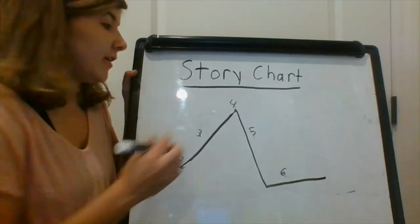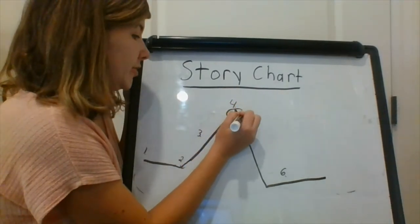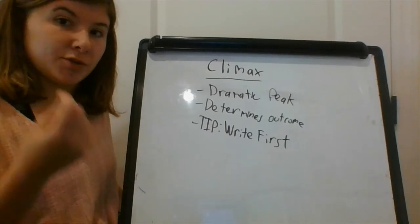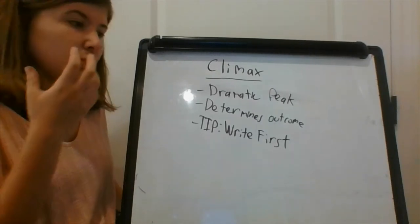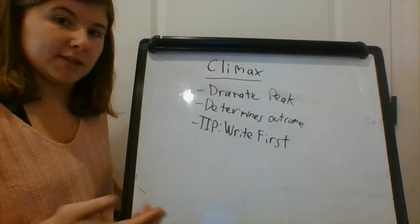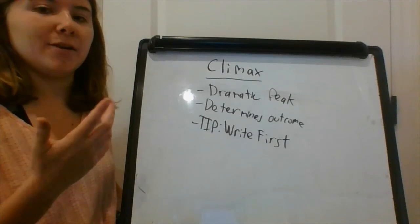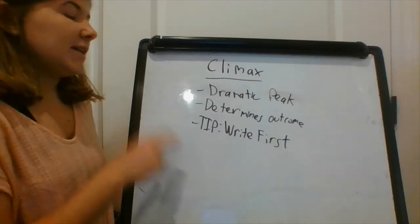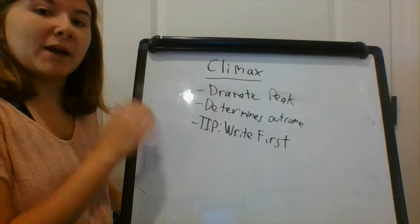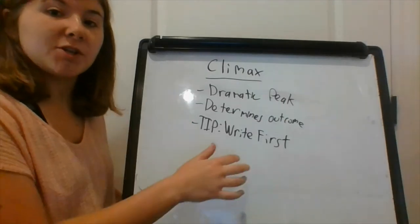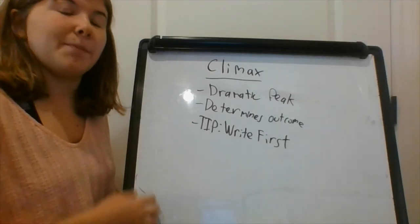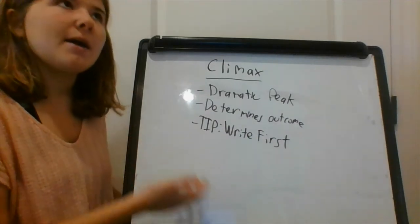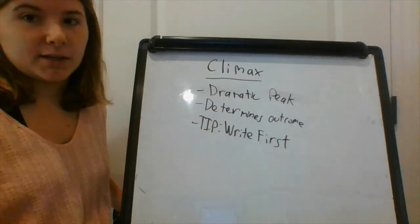The fourth part of your narrative is the climax. Your climax is the dramatic peak of your story. It is what determines the end of the conflict — for example, it might be the battle with the final boss in an action movie. A tip I can give you is that you might want to write the climax first, to make sure the rest of the story builds around it nicely enough for it to make sense while also being surprising.